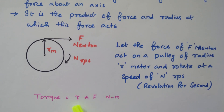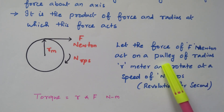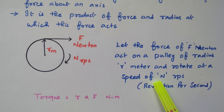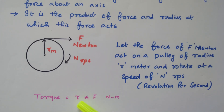Torque equals R into F, Newton meter — that is the unit. Let the force of F Newton act on a pulley of radius R meter and rotate at a speed of N RPS. Then torque is nothing but radius into force — the twisting or turning moment of the force about its axis, which is the product of the force created and the radius of the drum.